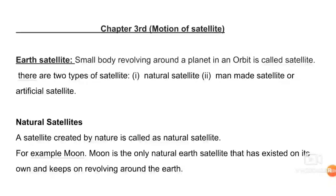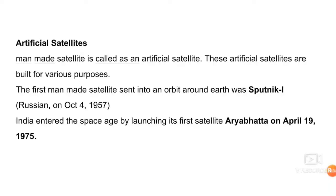The moon is a satellite of the earth that has existed on its own and keeps on revolving around the earth continuously. A man-made satellite is called an artificial satellite. These artificial satellites are built for various purposes. The first man-made satellite was Sputnik 1.